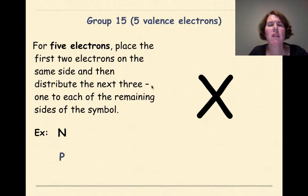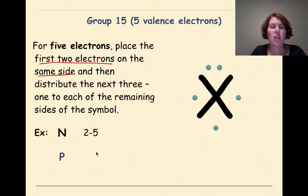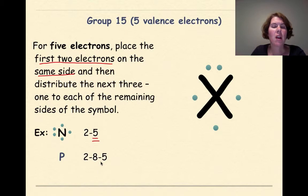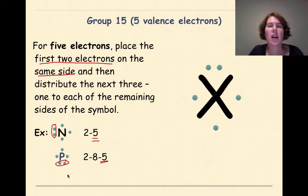Group 15 has 5 valence electrons. Place the first 2 electrons on the same side, then distribute the next 3 — one to each of the remaining sides. So you'll have 1 filled side and the other 3 sides with 1 electron each. Nitrogen has an electron configuration of 2, 5 — 5 valence electrons. Phosphorus is 2, 8, 5. It does not matter which side has your 2 electrons, but keep that side filled with 2 and then 1 on each remaining side.